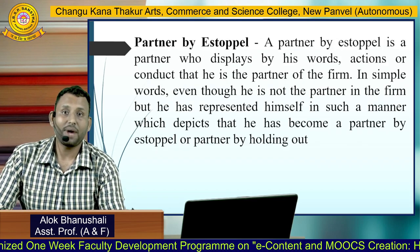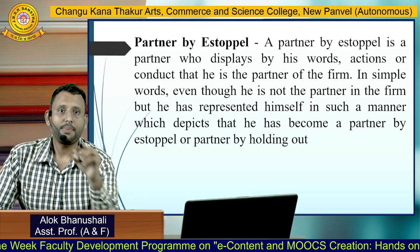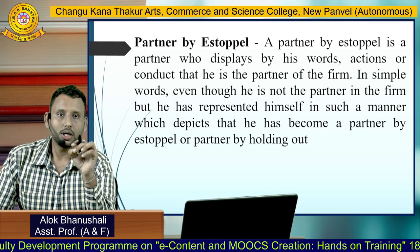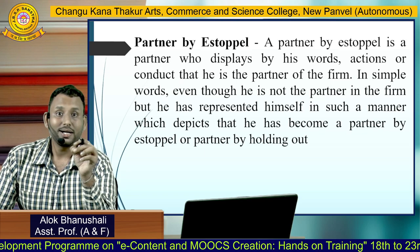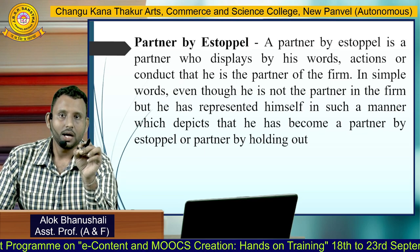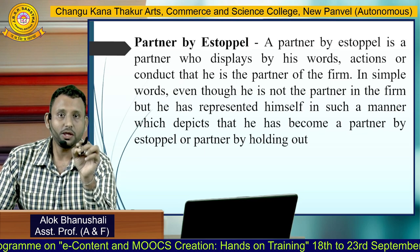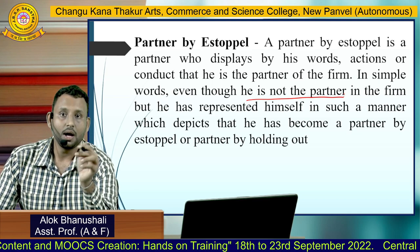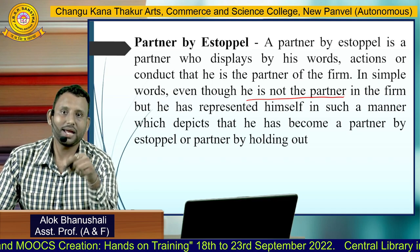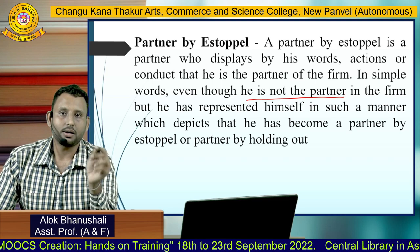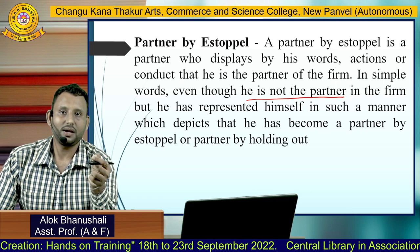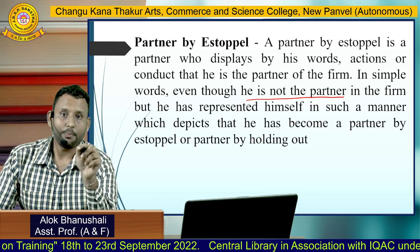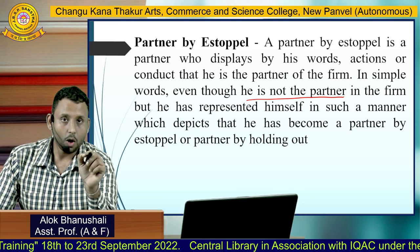A partner by estoppel is a partner who displays by his words, actions, or conduct that he is a partner of the firm. In simple words, even though he is not actually a partner in the firm, he acts like one. He has represented himself in such a manner that he becomes a partner by estoppel, also called partner by holding out.